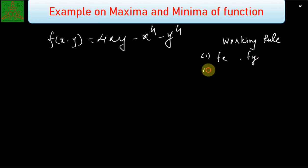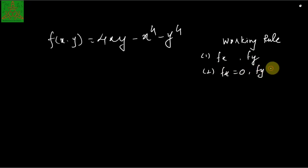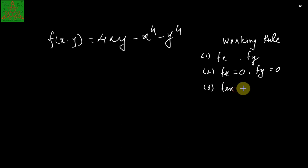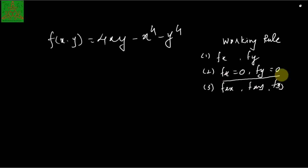The second step is finding all those points where fx and fy equal zero. The third step is finding fxx, fxy, and fyy. All those points where fx and fy are zero are called the critical points.